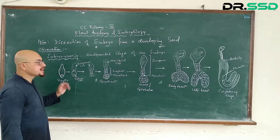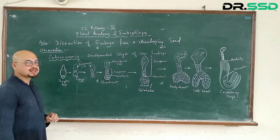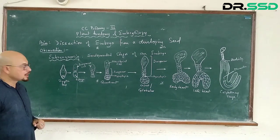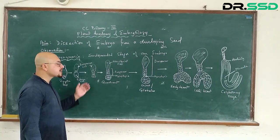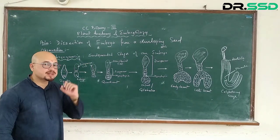Now this is going to divide mitotically into two cells. The upper cell becomes the suspensor cell and the lower is the embryonal cell.